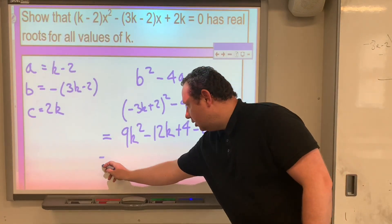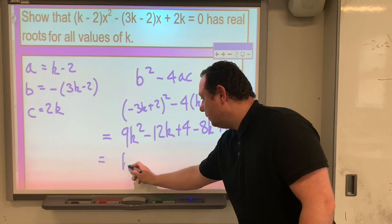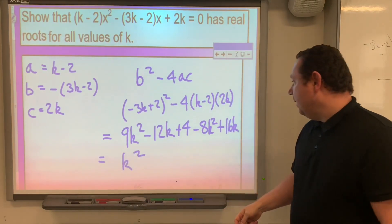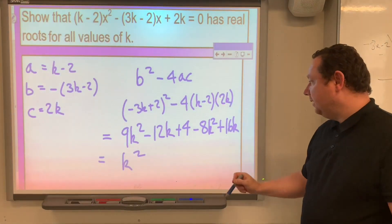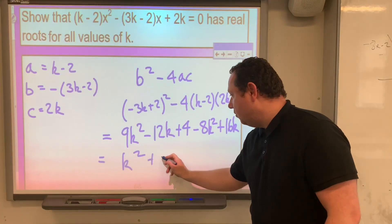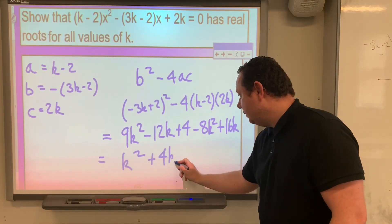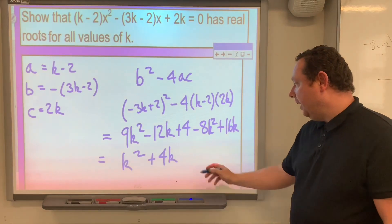Tidying this expression up, I've got 1k squared, and I've got minus 12k adds 16k is plus 4k, then I've got plus 4 on the end.